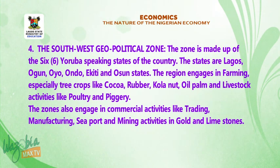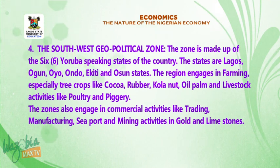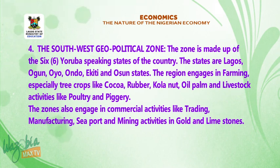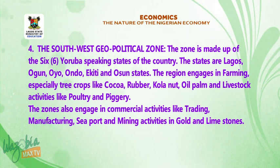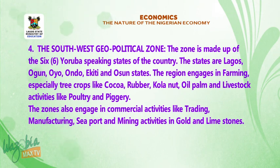Number four, the south-west geopolitical zone. The zone is made up of six Yoruba-speaking states of the country. The states are Lagos, Ogun, Oyo, Ondo, Ekiti, and Osun State. The region is engaged in farming, especially tree crops like cocoa, rubber, kola nuts, oil palm, and livestock activities like poultry and piggery. The zone is also engaged in commercial activities like trading, manufacturing, seaport, and mining activities in gold and limestone.